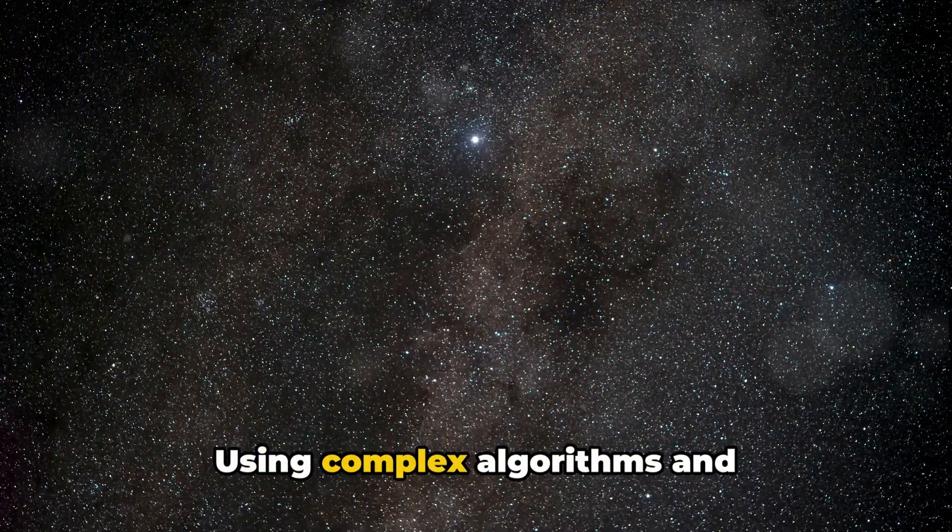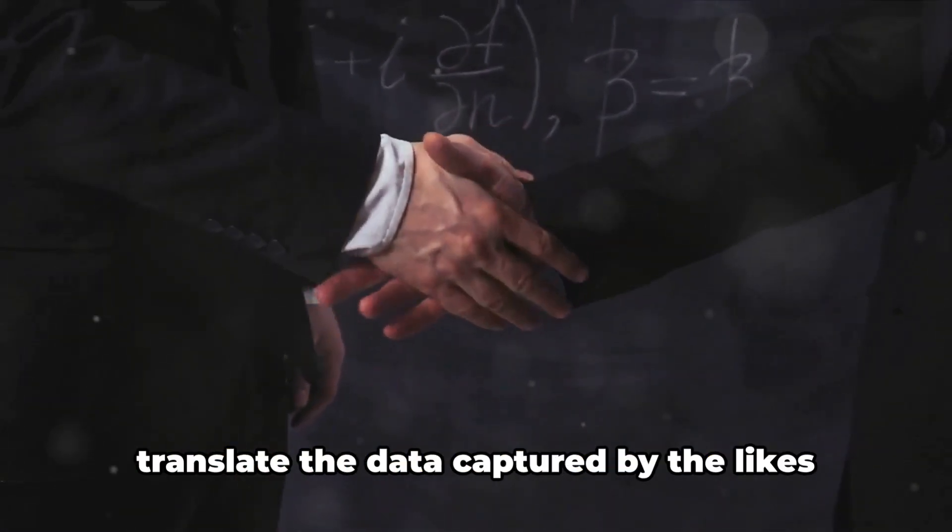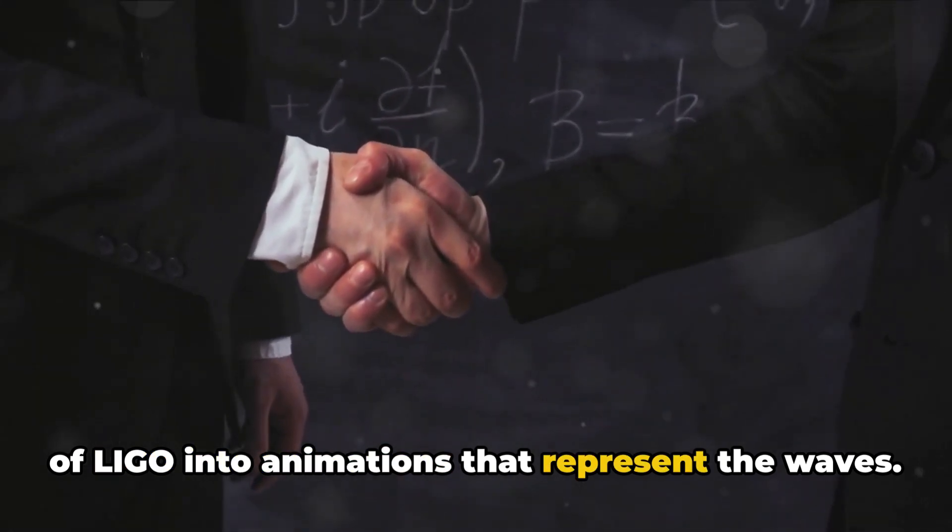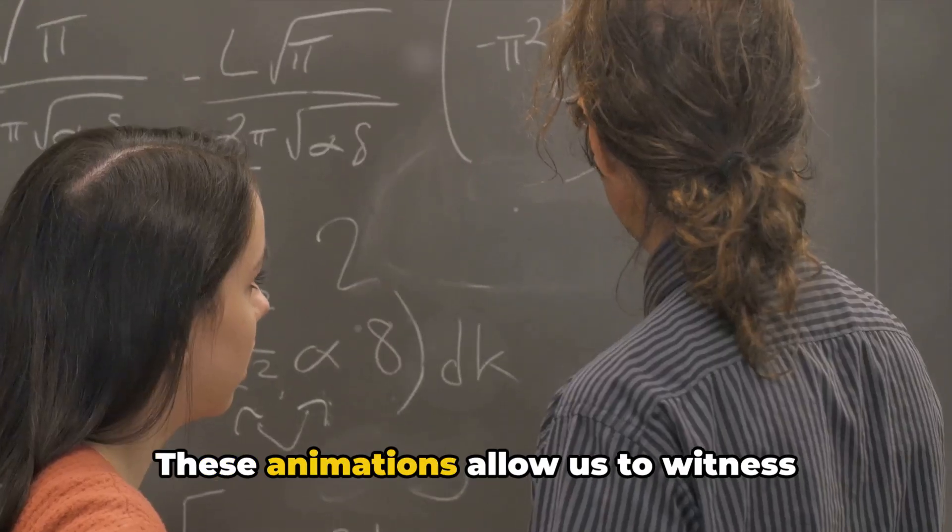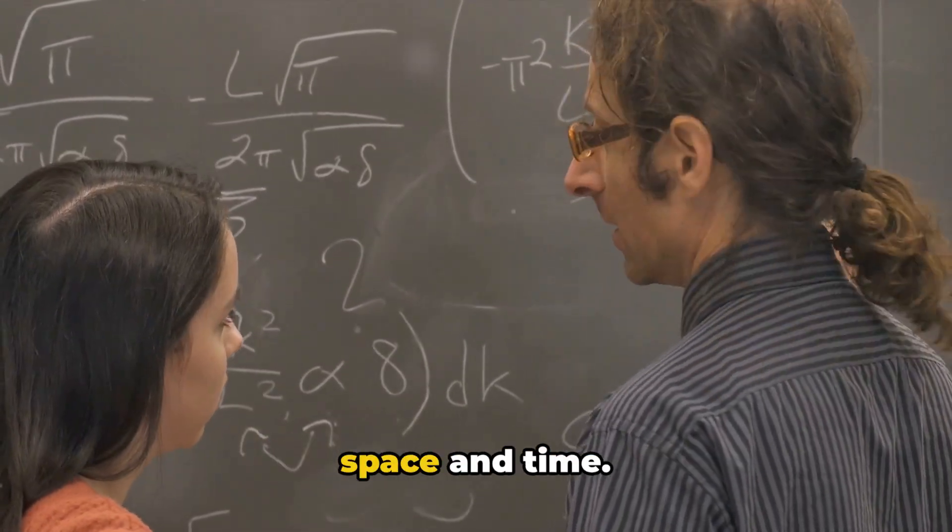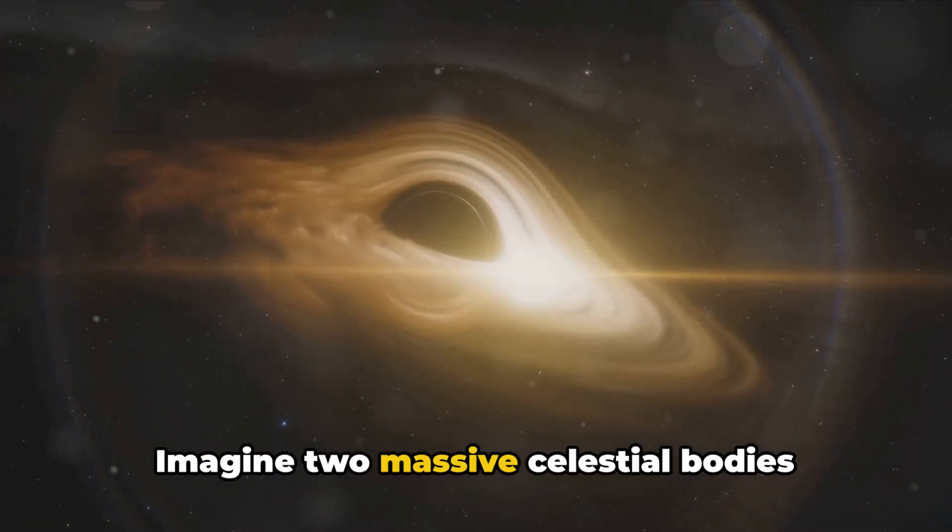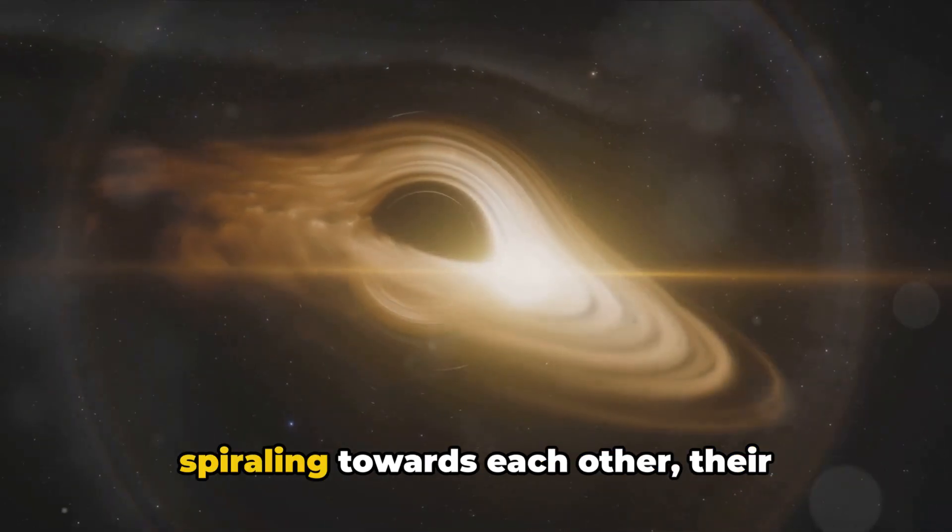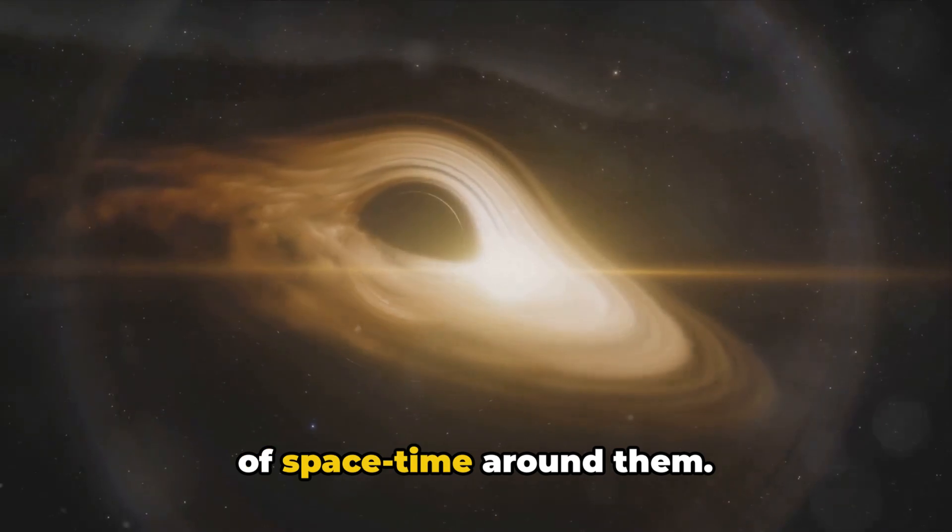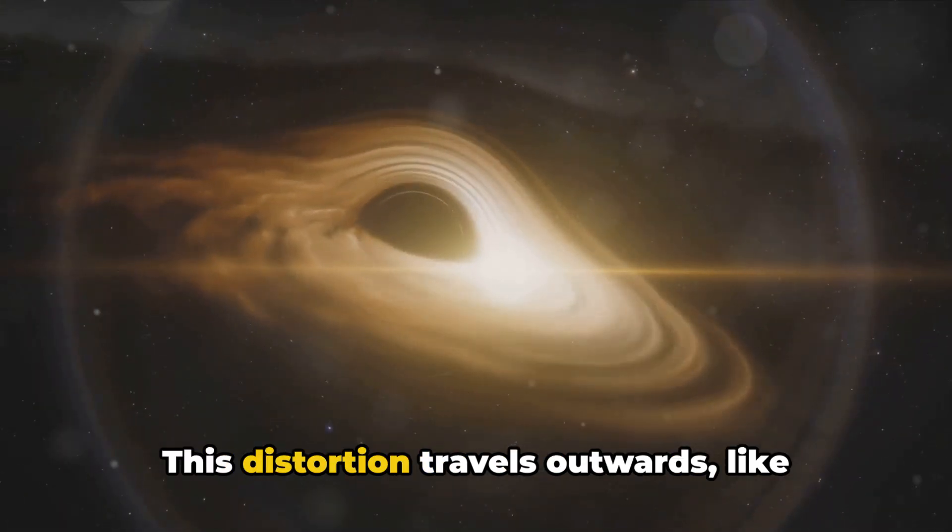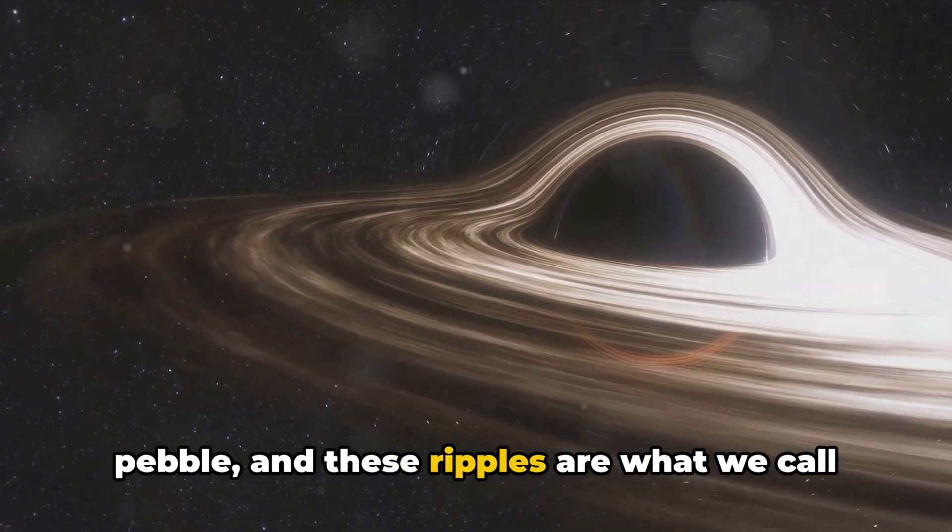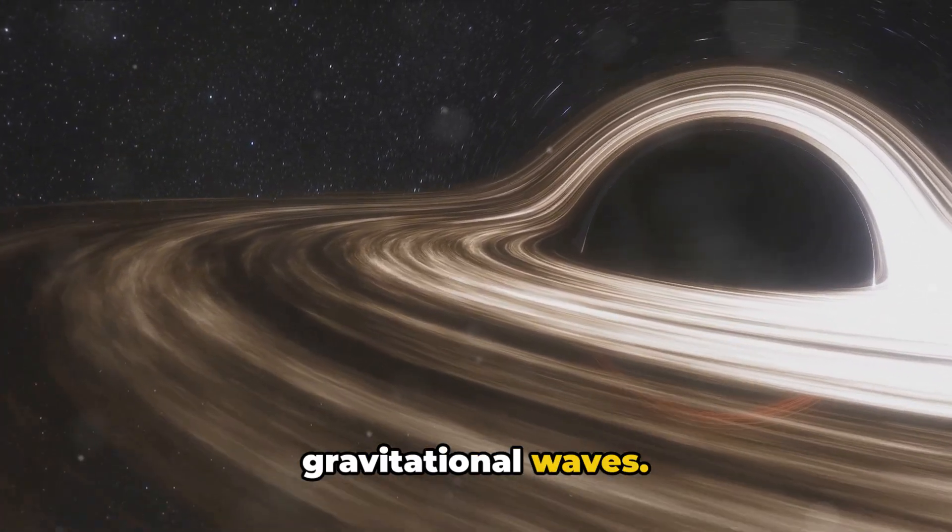Using complex algorithms and sophisticated devices, scientists translate the data captured by the likes of LIGO into animations that represent the waves. These animations allow us to witness something extraordinary, the dance of space and time. Imagine two massive celestial bodies spiraling towards each other, their gravitational pull distorting the fabric of space-time around them. This distortion travels outwards, like ripples on a pond created by a thrown pebble. And these ripples are what we call gravitational waves.